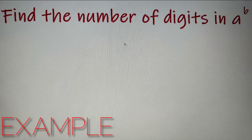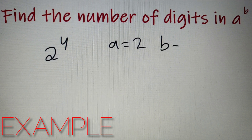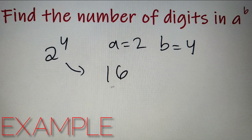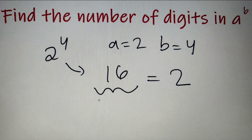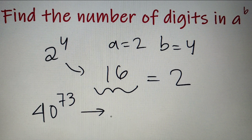Let's take an example of a number of this form. For example, 2 to the power 4 is of the form A raised to B, where A is equal to 2 and B is equal to 4. Now we know that 2 raised to 4 is equal to 16, so the number of digits in 2 raised to 4 is equal to 2. Now this was a pretty simple case — what if I tell you to find out the number of digits of 40 to the power 73? This number seems to be very large and to calculate the number of digits without any formula or method seems to be impossible.